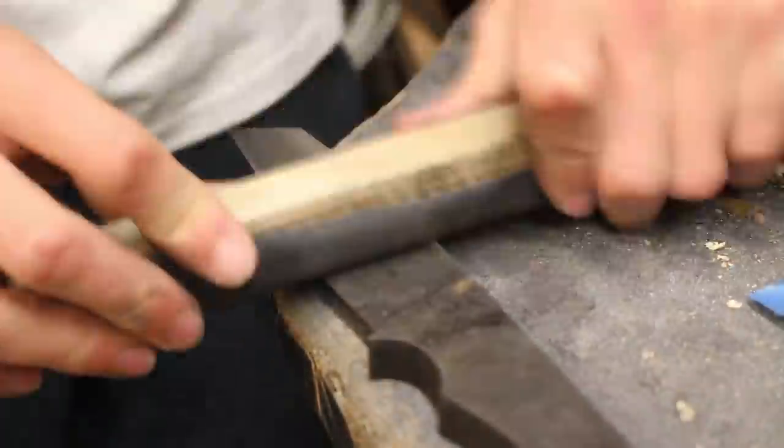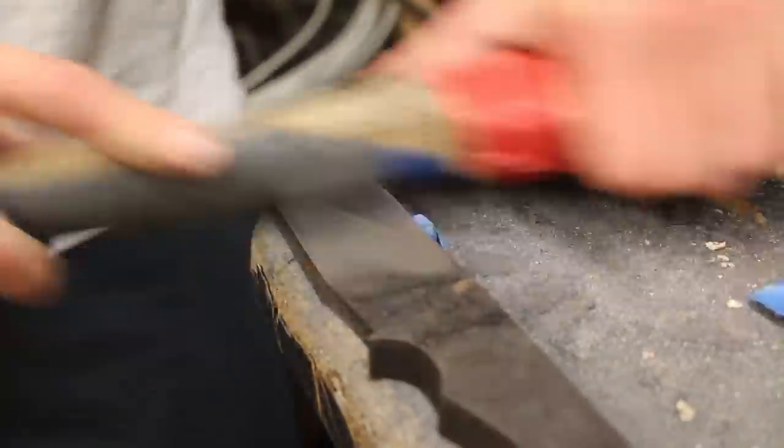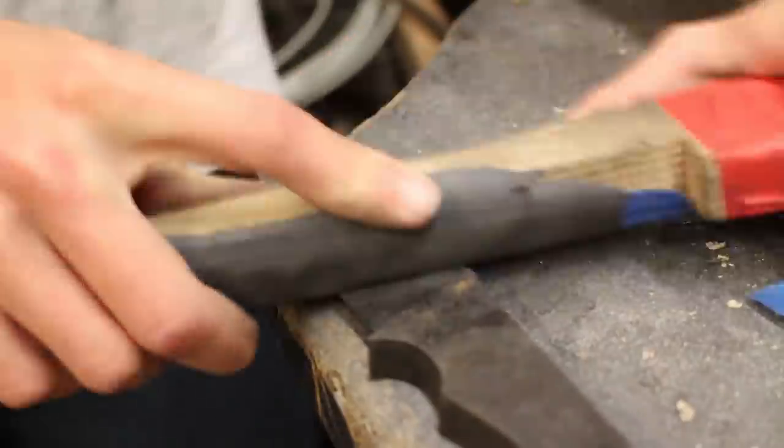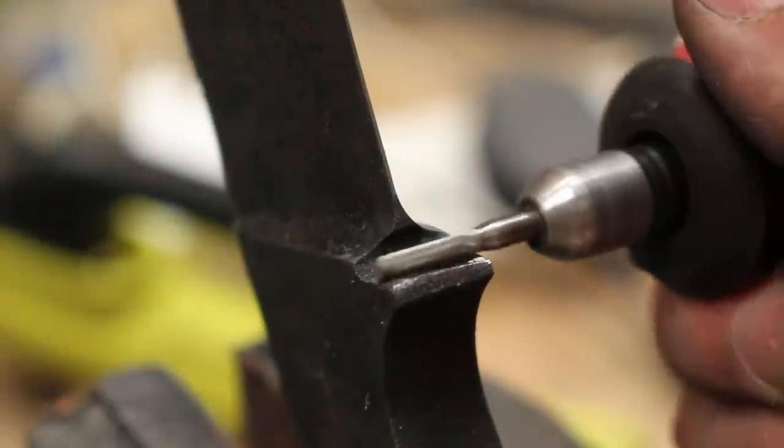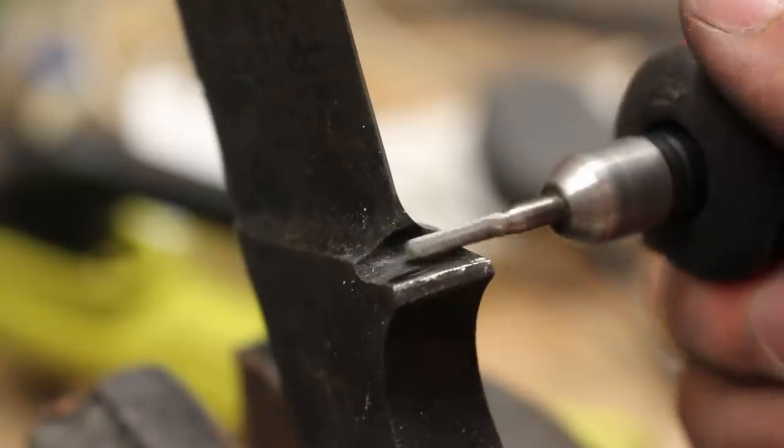It was then time to clean off the oxide and scale from heat treat using some 240 grit wet and dry paper. As I was sanding I noticed that this section just at the edge of the plunge lines was looking really rough and I forgot to sand this before the heat treat.